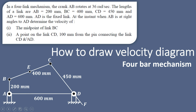We also have to find the velocity of a point on link CD which is 100 mm from the pin connecting link CD and AD. This point is called F. So this is a typical example in which we have to find the velocity of the midpoint E of the coupler link and the extension point F.